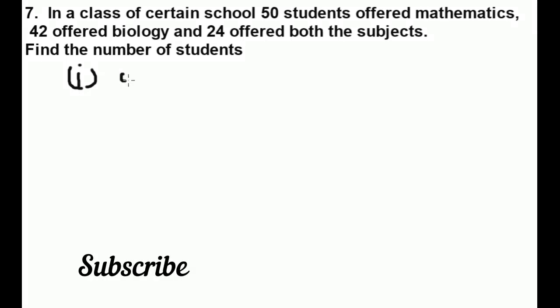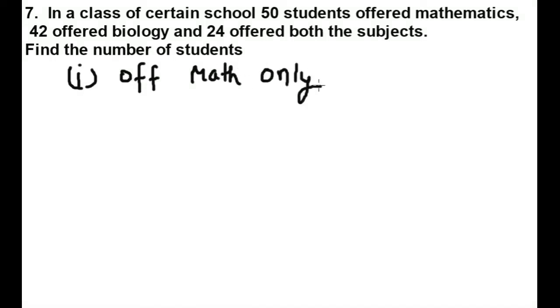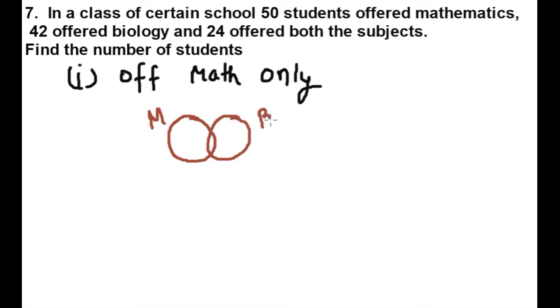Question number 1: offering mathematics only. Let's start with the Venn diagram. Let's suppose this is maths and this is biology. We will denote maths as M and biology as B.